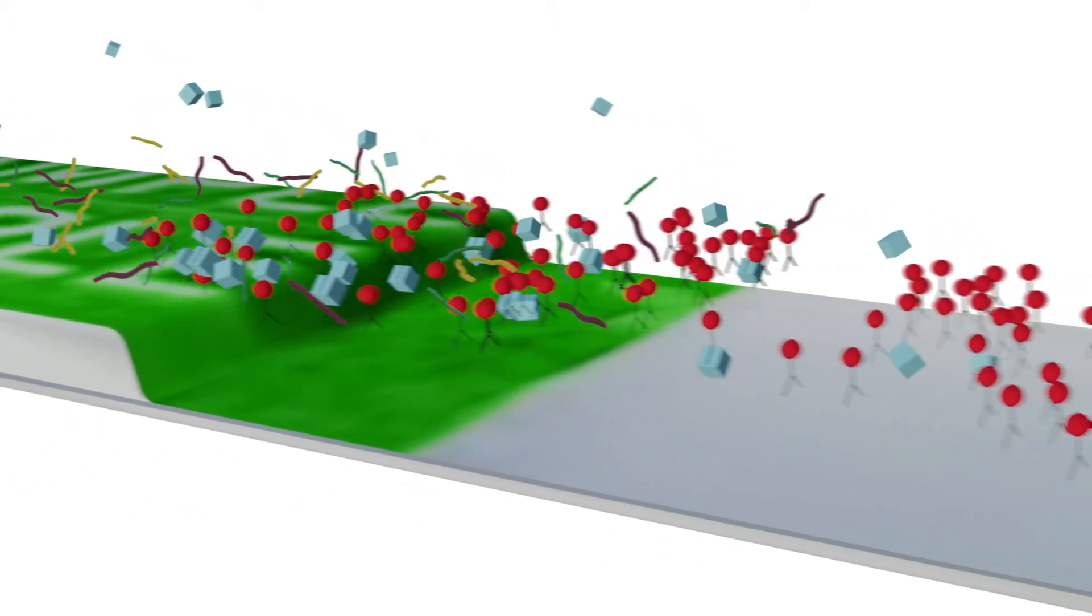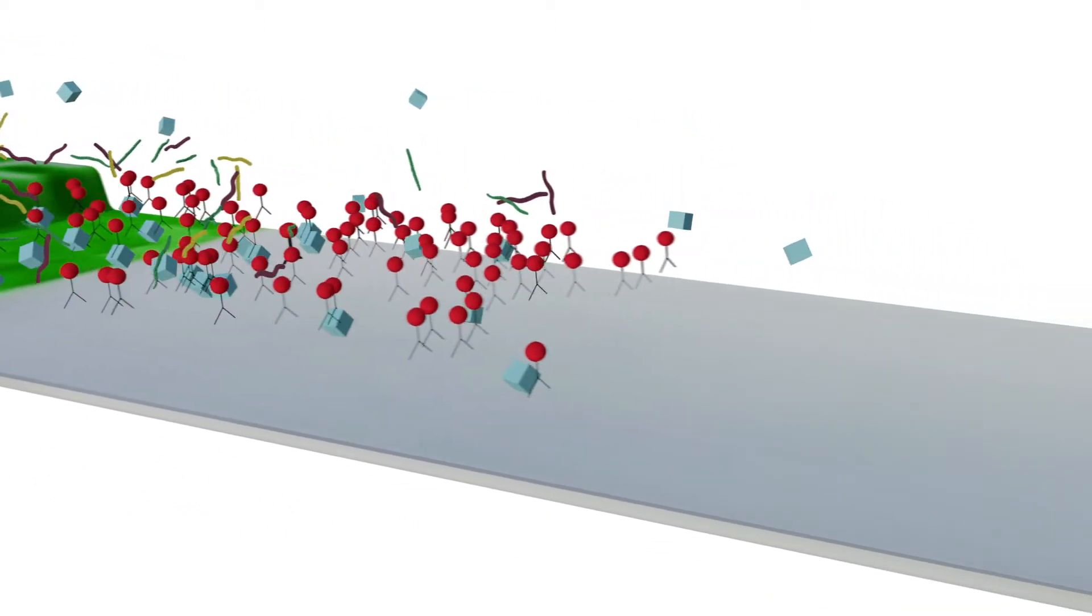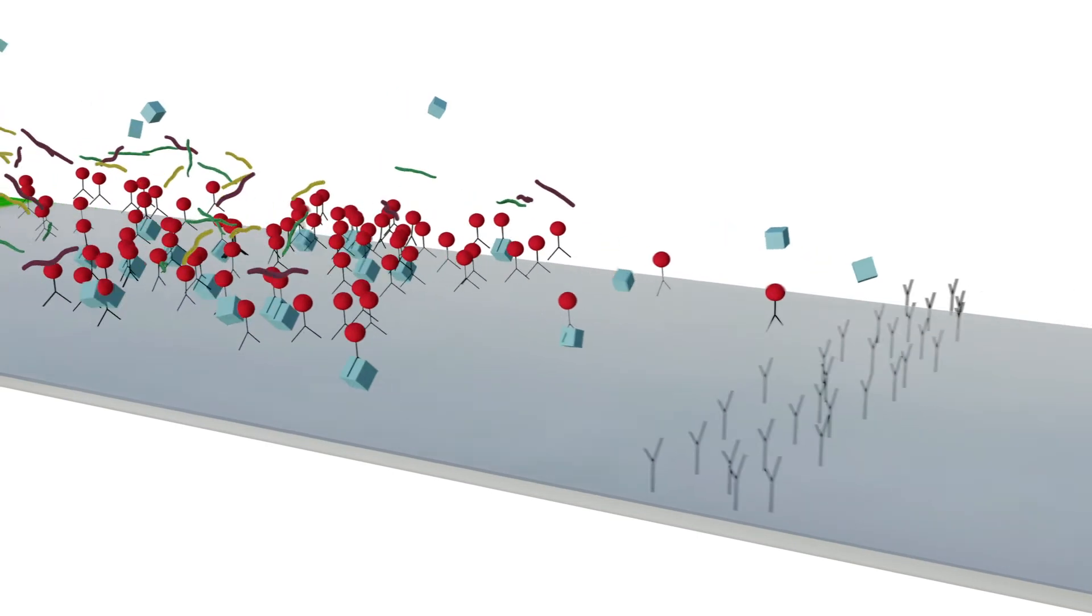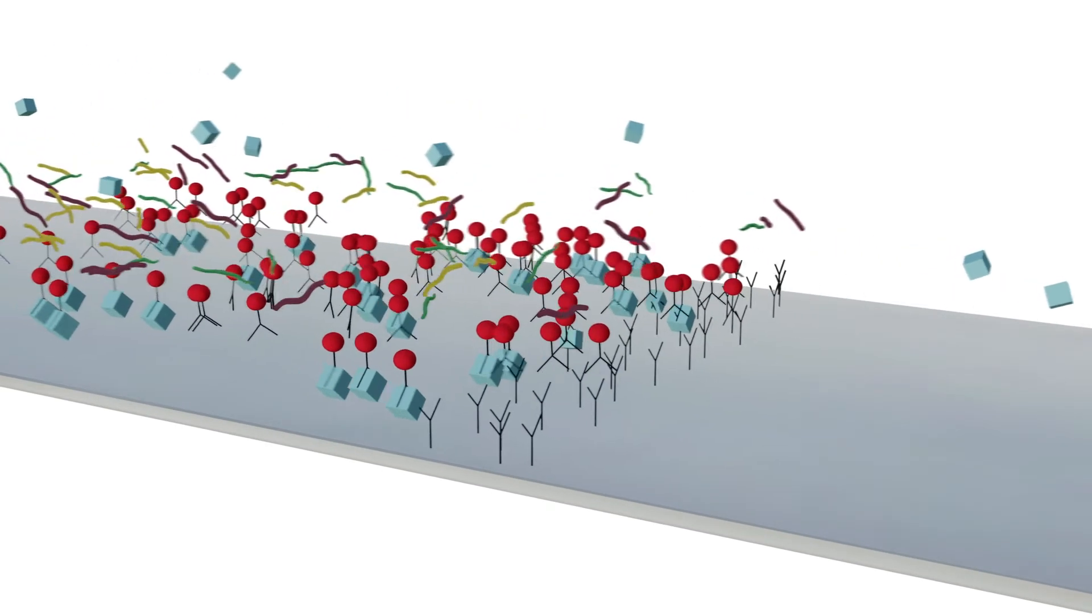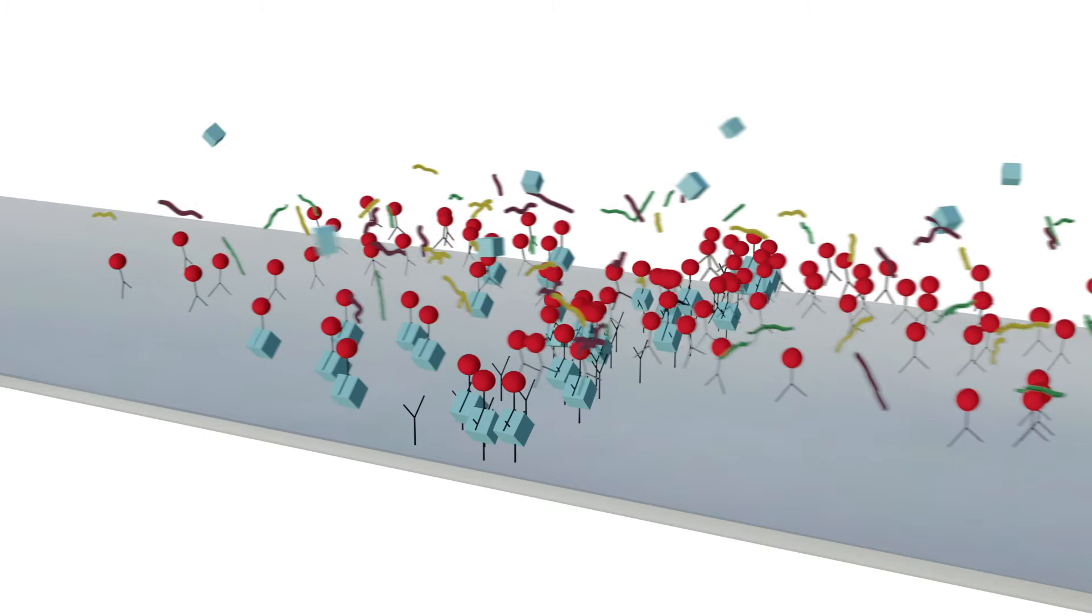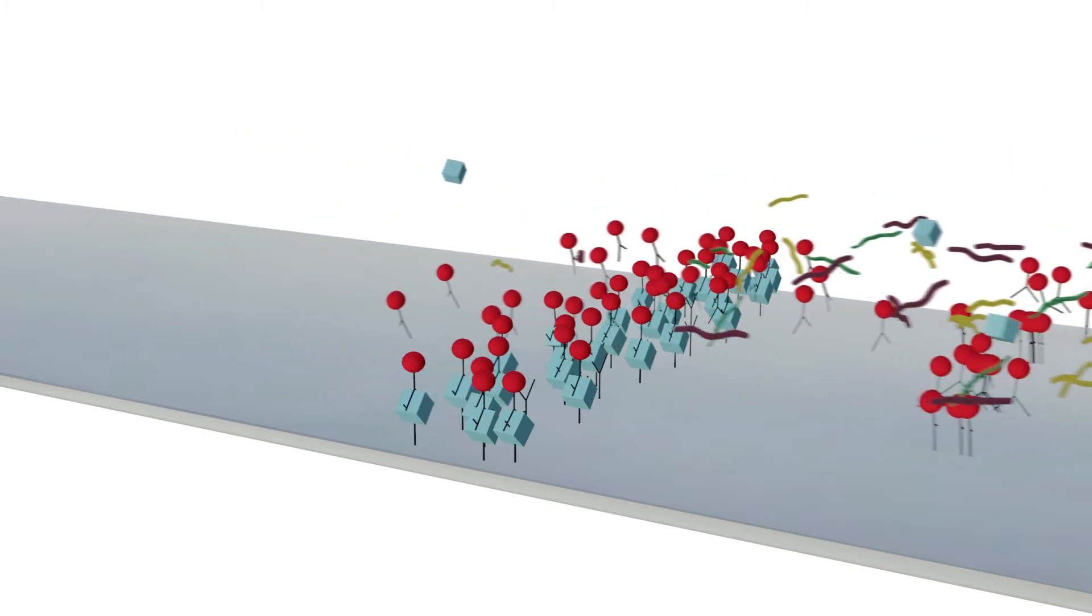Target pathogens contained in the sample bind to the color labeled antibody. Together, these bind to the antibody on the test line, forming an antibody-target-pathogen-antibody sandwich.